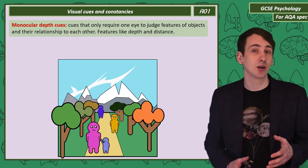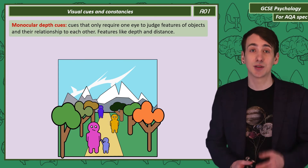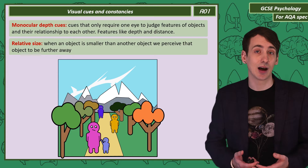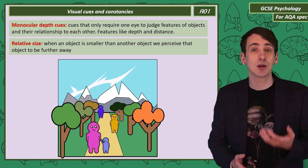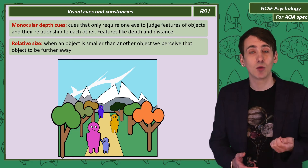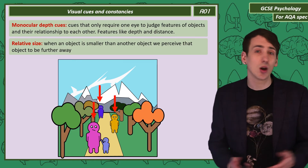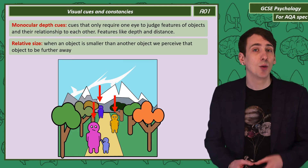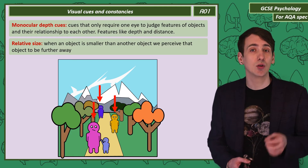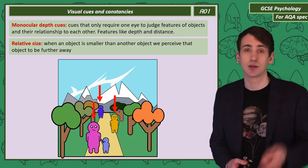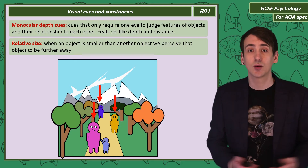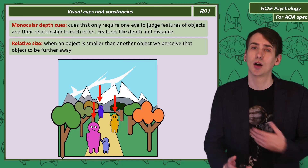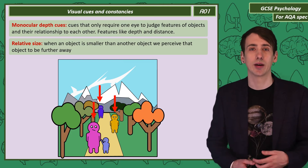Another monocular depth cue is relative size. I've drawn these people in decreasing size, giving the impression that the smallest is further away. The largest tree is bigger than the mountain, but we also use our experience of objects to judge distance — so we assume the mountain is much larger than the trees but further away.